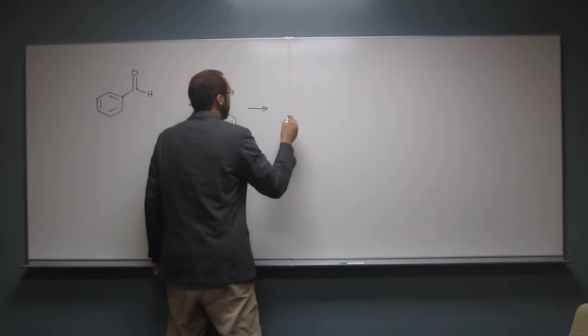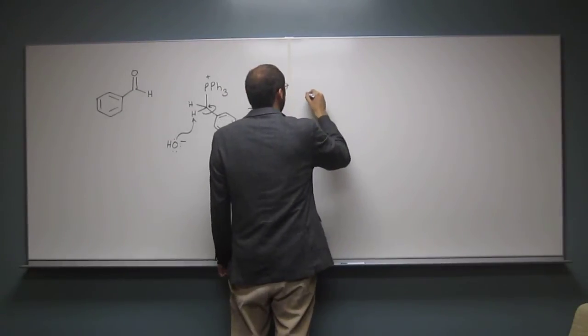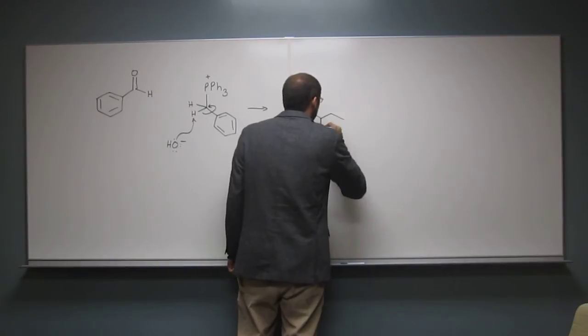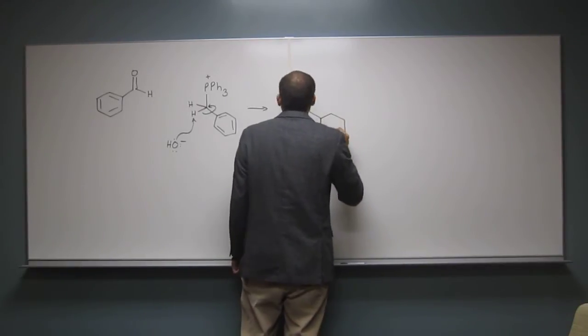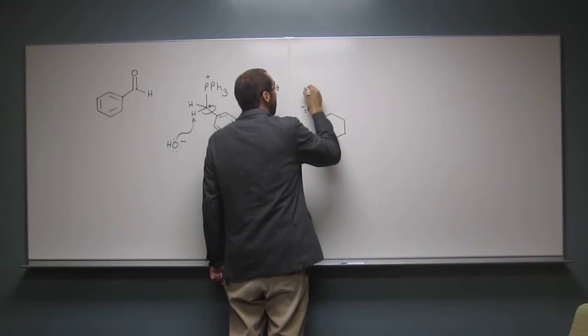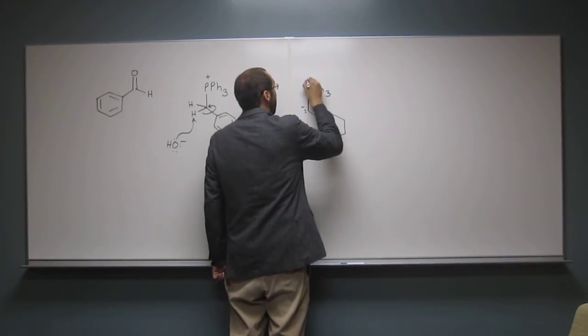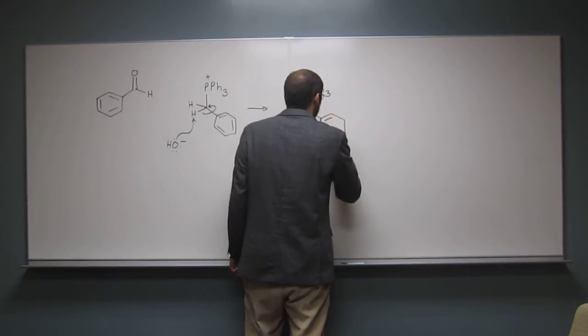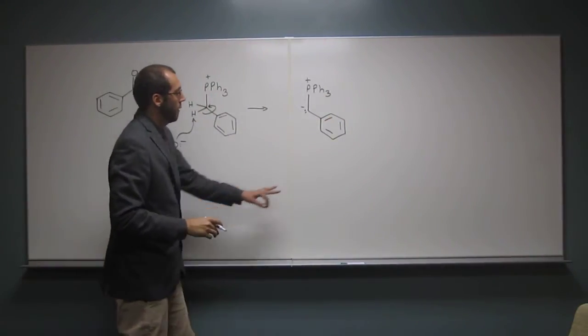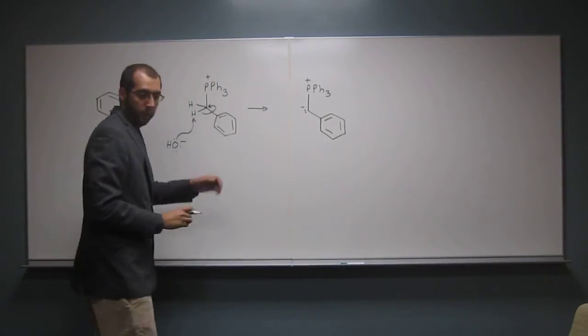Okay, so when we do that, we're going to form... So this is just one of the resonance forms. We'll keep it like this for ease of showing the mechanism, the carbanion on there. Okay, so we have that. We formed water also. So remember, that's the phosphonium ylide that we're going to use to react.